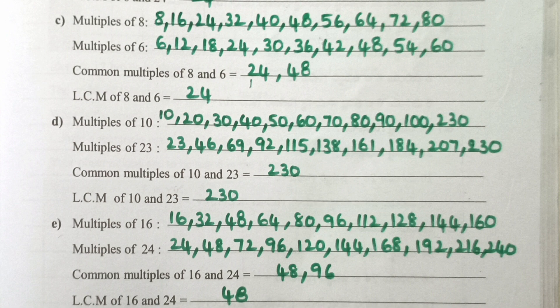Multiples of 10: 10, 20, 30, 40, 50, 60, 70, 80, 90, 100. Multiples of 23: 23, 46, 69, 92, 115, 138, 161, 184, 207, 230. Common multiples of 10 and 23 is 230.